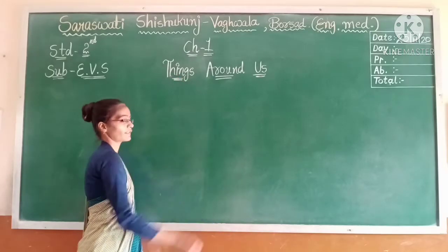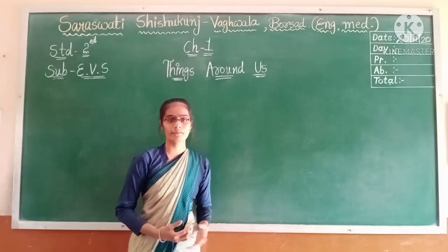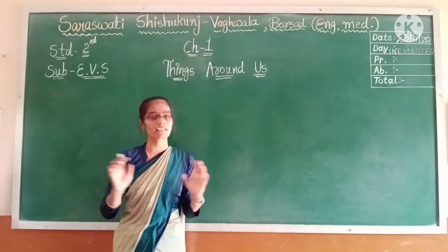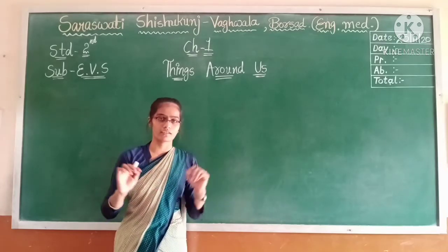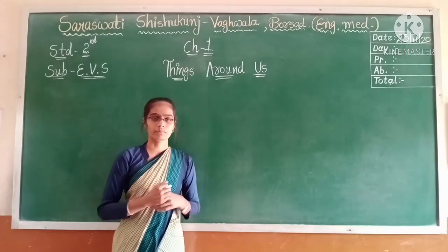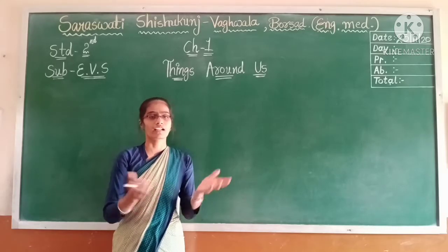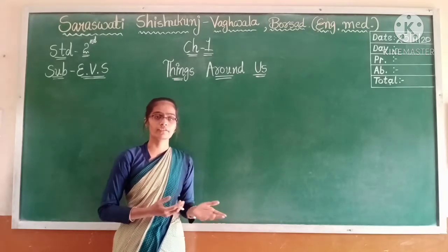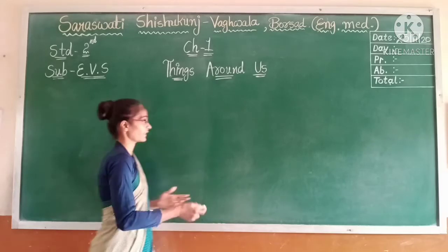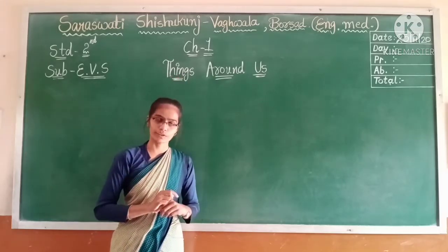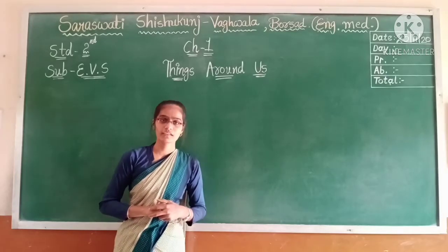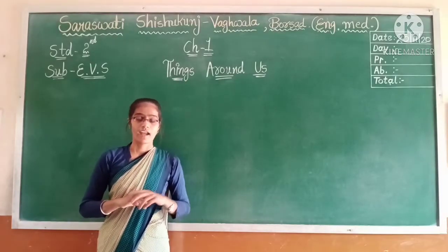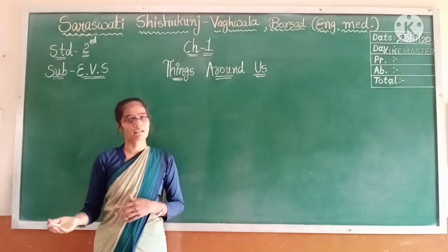What is the meaning of 'things around us'? Things means we all are surrounded by many things — we find many things surrounding us, around us. For example, if you are seated in a bedroom, which things do you find around you? You might find a bed, cupboard, study table. So all these things are called things that you find around you. In this chapter, we are going to learn about things that we find around us — some are natural and some are man-made.